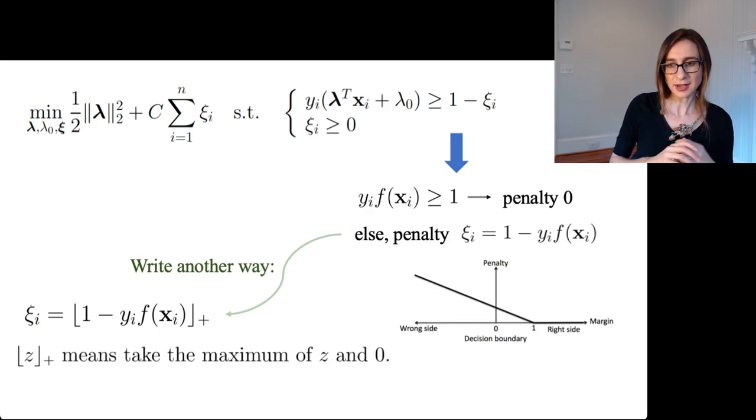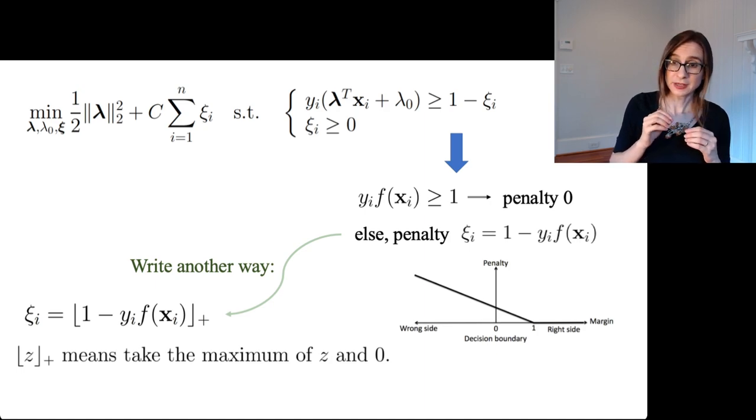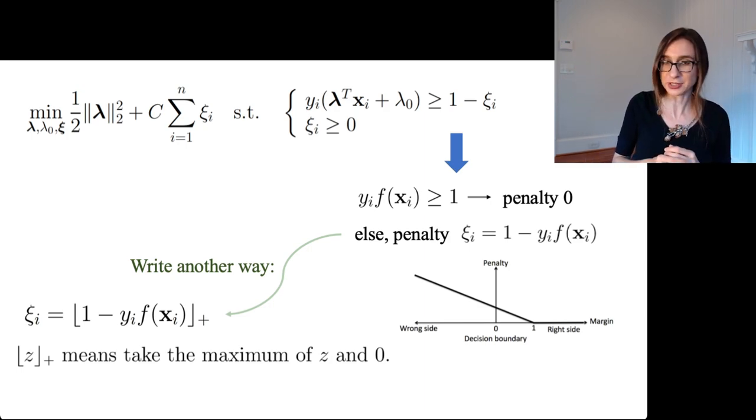So xi is what? If the margin is bigger than one, xi is zero. There's no penalty. If y times f is less than one, that's where xi is one minus y times f, right? Whatever that value is, okay? Because it's positive, so we keep it. That's the penalty. That's the slack.